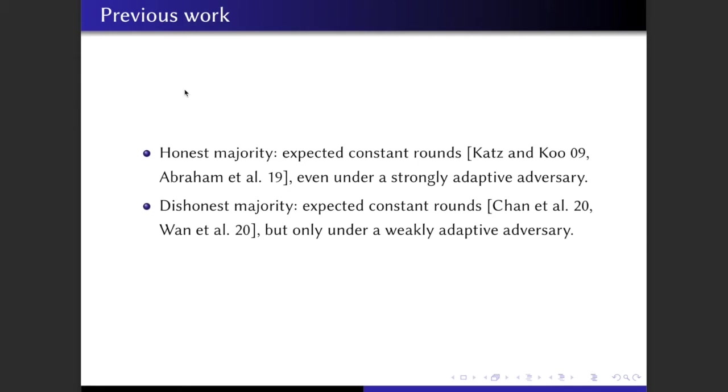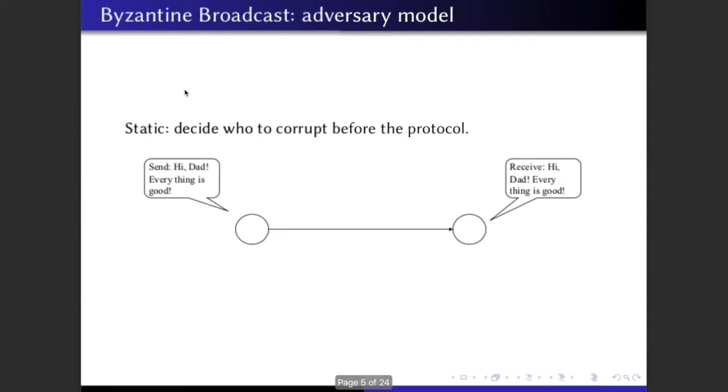Before we move on to the details, let's first clarify the adversary model. Usually in consensus, we consider three adversary models. The first one is the static adversary, which is the weakest adversary model. In the static adversary, an adversary needs to decide who to corrupt before the protocol begins. Once the protocol starts, the adversary cannot corrupt any other honest users or any incoming new users.